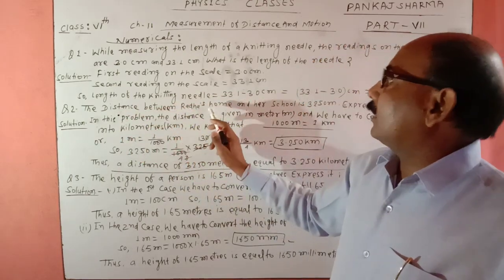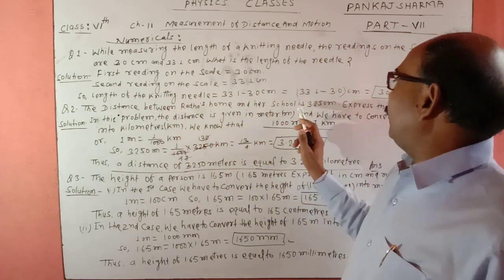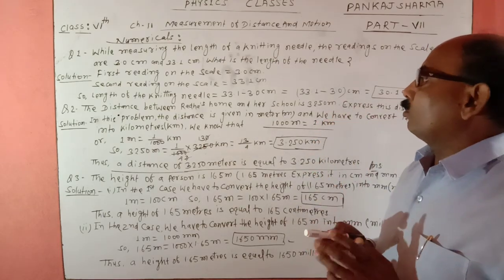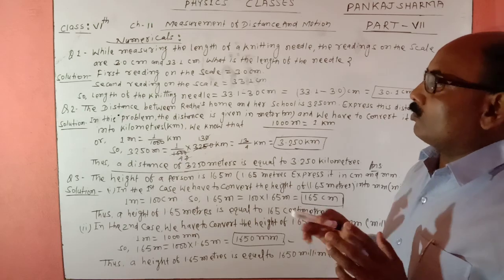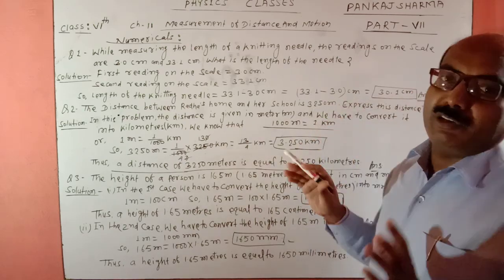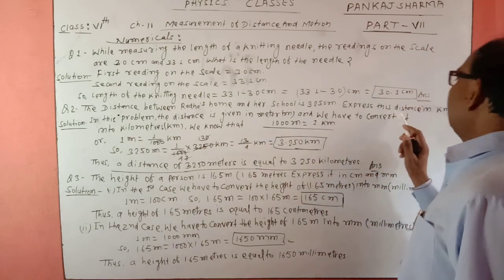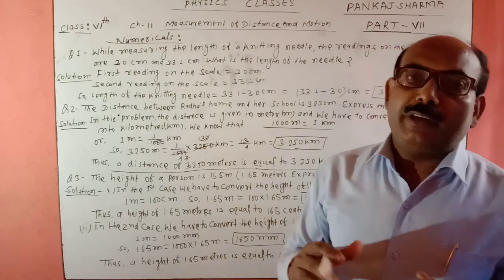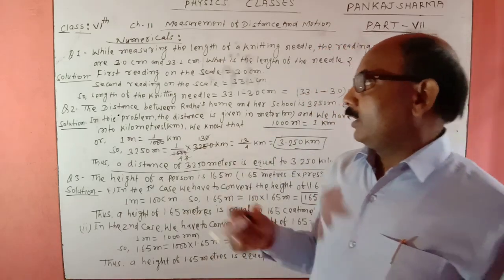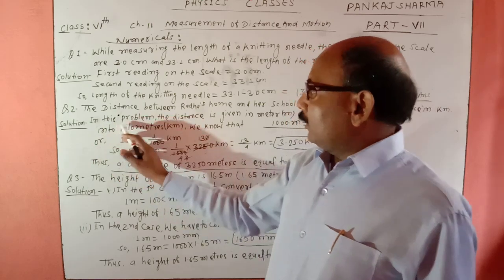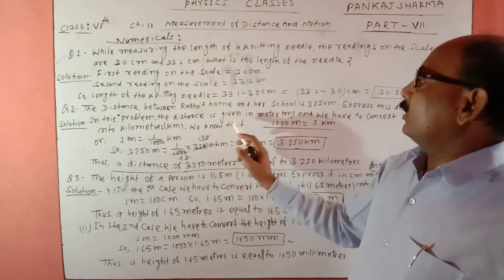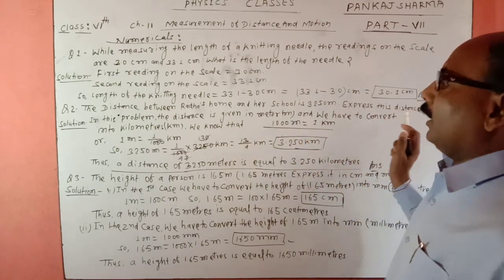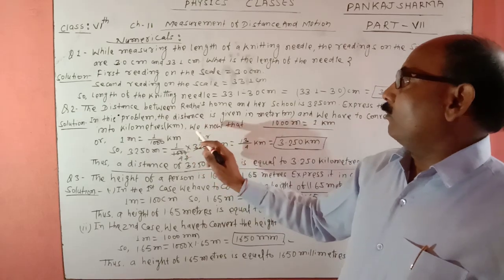Second question: The distance between Radha's home and her school is 3,250 meters. Radha के घर और उसके school के बीच की दूरी 3250 meter है। Express this distance in kilometer. इस दूरी को kilometer में व्यक्त करना है। In this problem, the distance is given in meter and we have to convert it into kilometer.